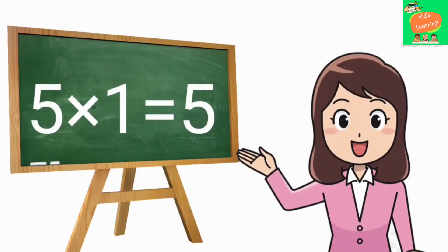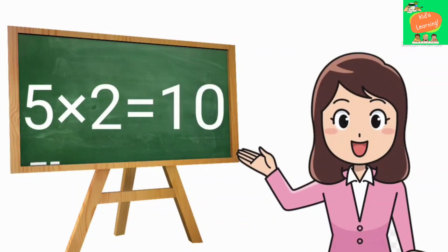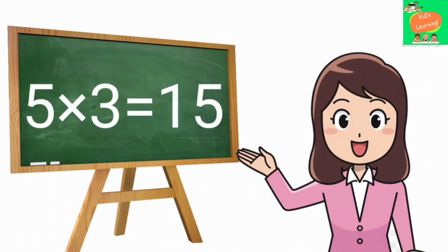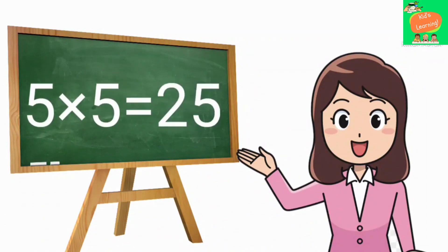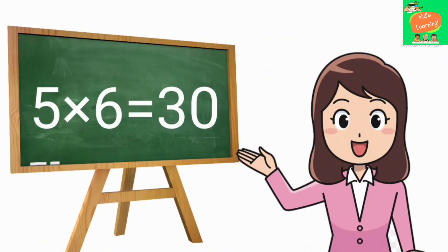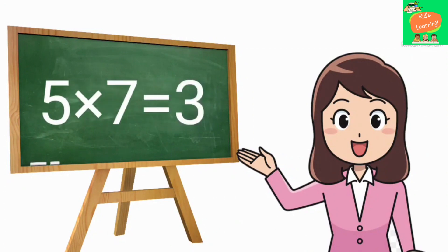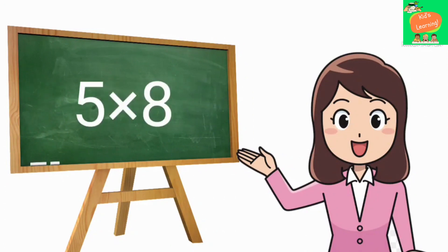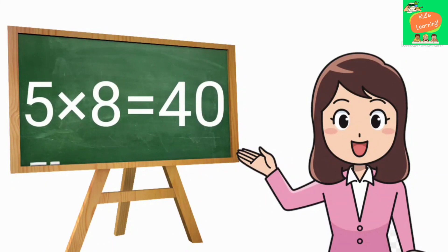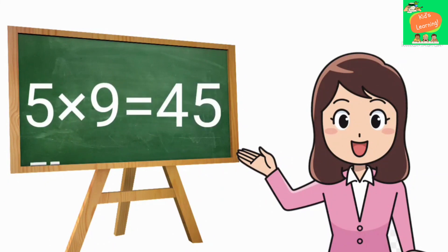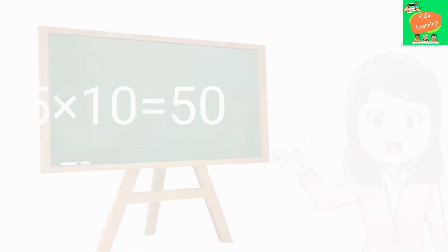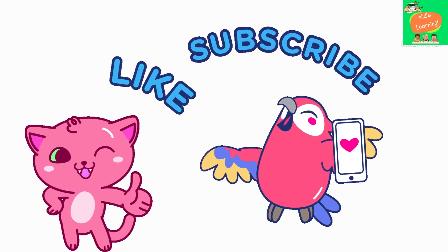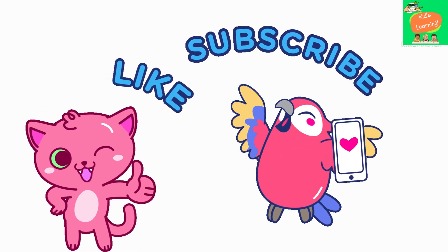Five ones are five, five twos are ten, five threes are fifteen, five fours are twenty, five fives are twenty-five, five sixes are thirty, five sevens are thirty-five, five eights are forty, five nines are forty-five, five tens are fifty. Very good! Thanks for watching our video. Like and subscribe for more videos. Goodbye!